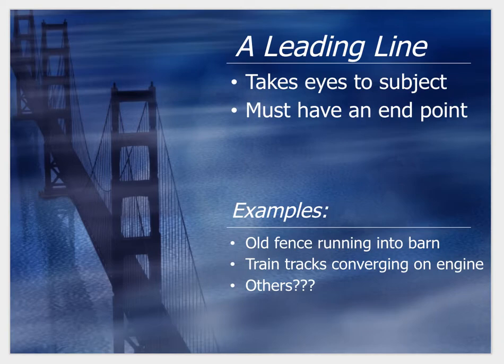Leading lines immediately draw the viewer's attention towards the subject. They are normally more obvious and easy to follow. The lines most commonly start at the bottom of the photo, then get smaller as they lead towards the subject. Also, in order for a leading line to actually be a leading line, it must have an end point. If it doesn't have an end point, it is just a random line in the photo that doesn't help draw attention towards the subject.